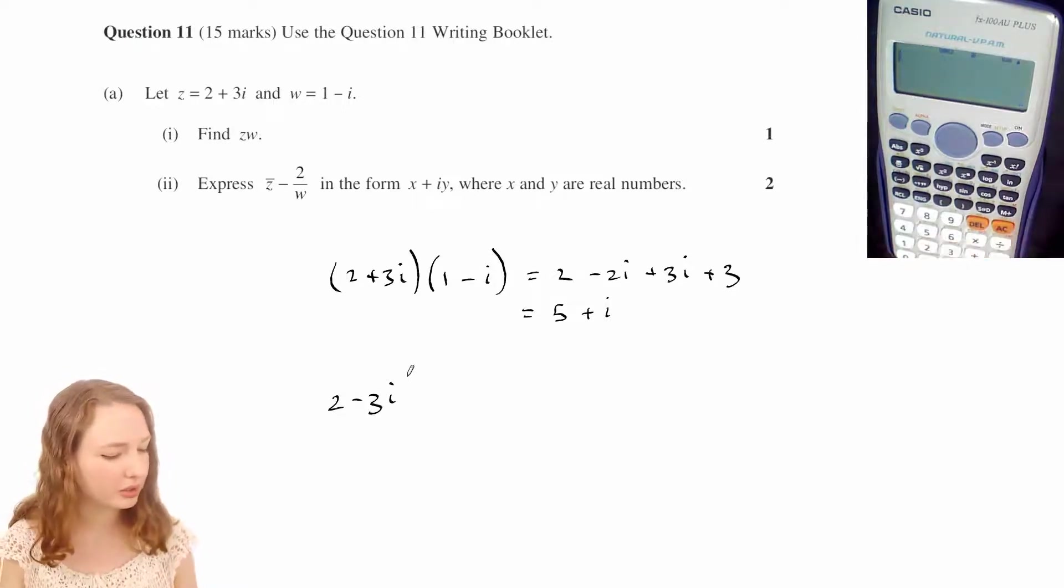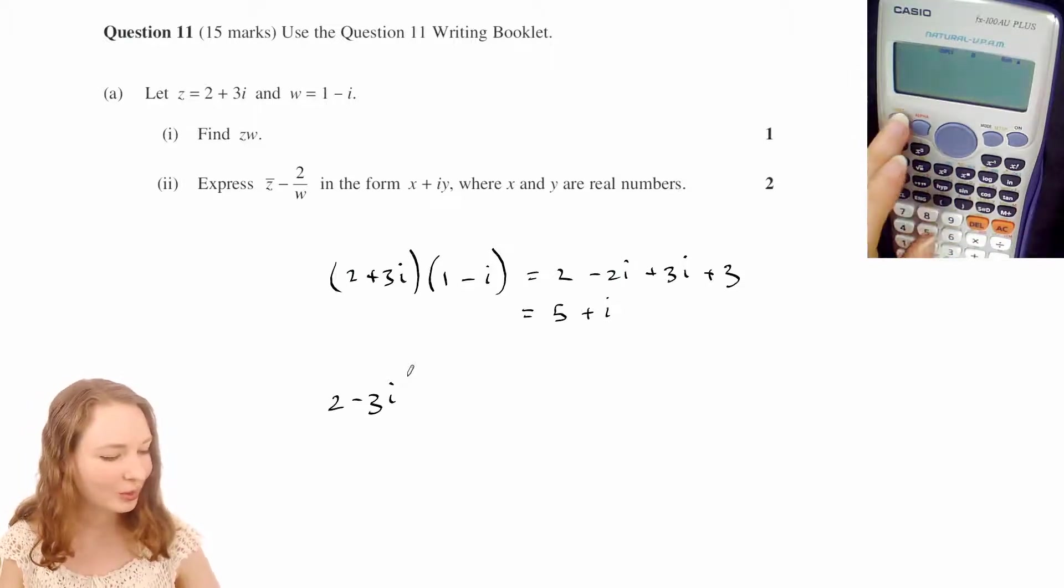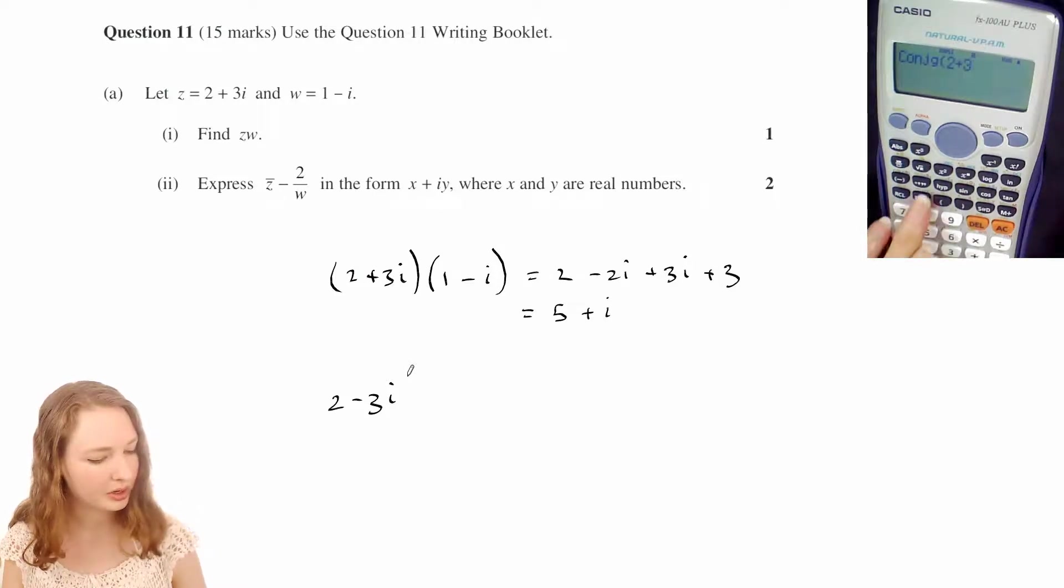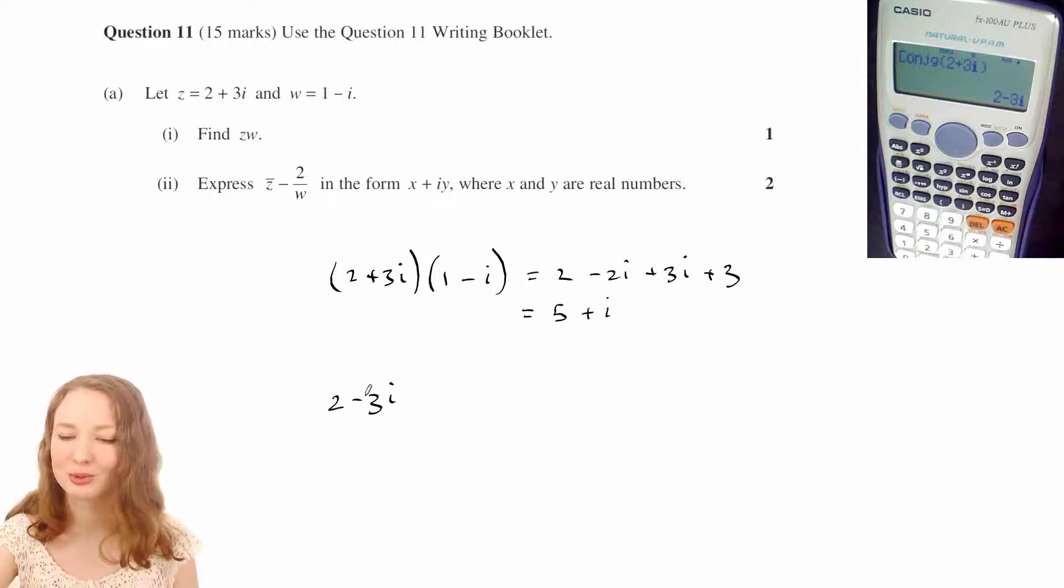You can also do that on the calculator, although it's not really worth it because it takes longer to punch in, but if you hit shift and then there's a little button here that says complex and then conjugate, then you can do 2 plus 3i, but of course much faster just to replace that plus with a minus.